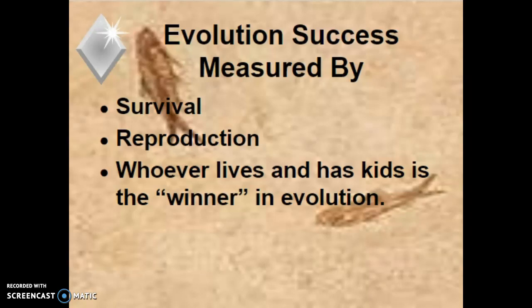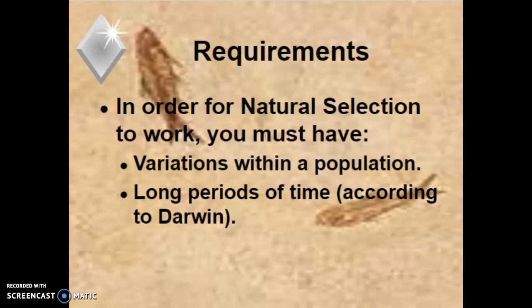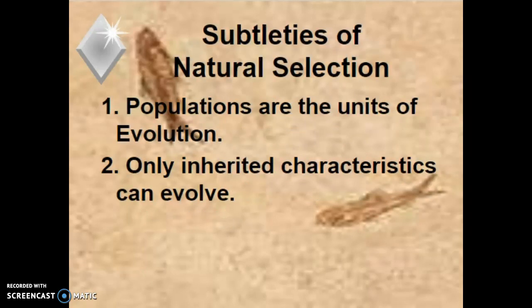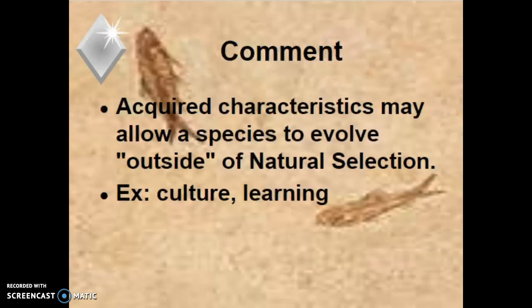The winner is whoever has the most kids. For natural selection to work, you have to have variation within a population and huge amounts of time — think back to gradualism, Charles Lyell, and uniformitarianism. Populations are the units of evolution; individuals can't evolve. I can adapt — I can do something I already do a little better — but if I move to Antarctica, I'm not going to suddenly sprout snowshoes. Also, only inherited characteristics can evolve; traits like muscle mass from exercise can't be passed along because they're not heritable. Some things like culture and learning appear to allow species to rise above the typical survival and reproduction measures of success.